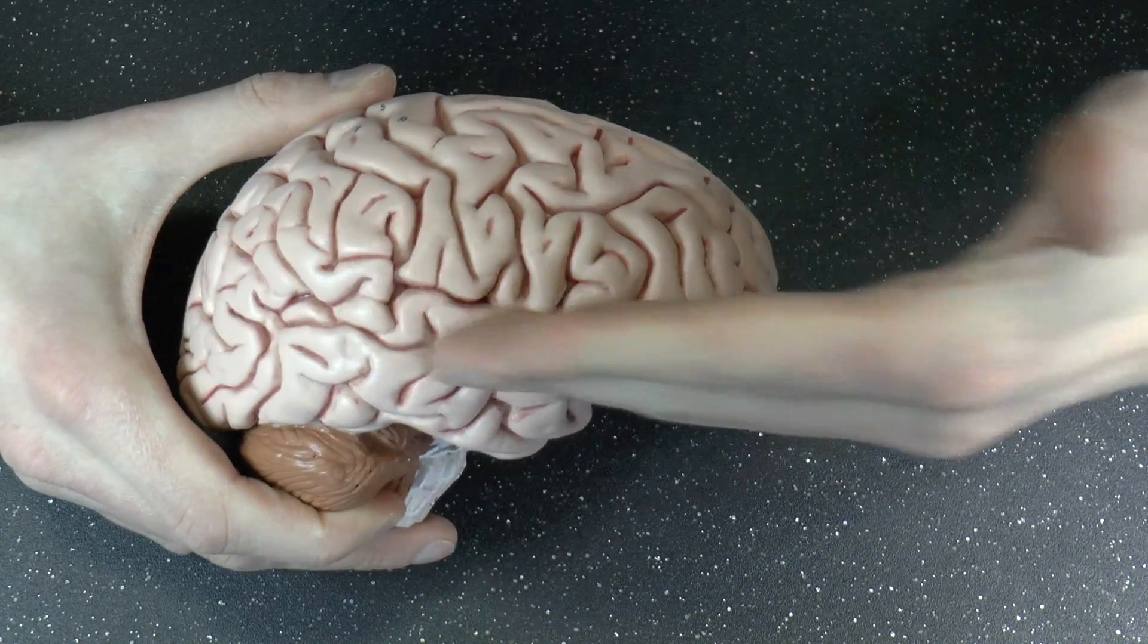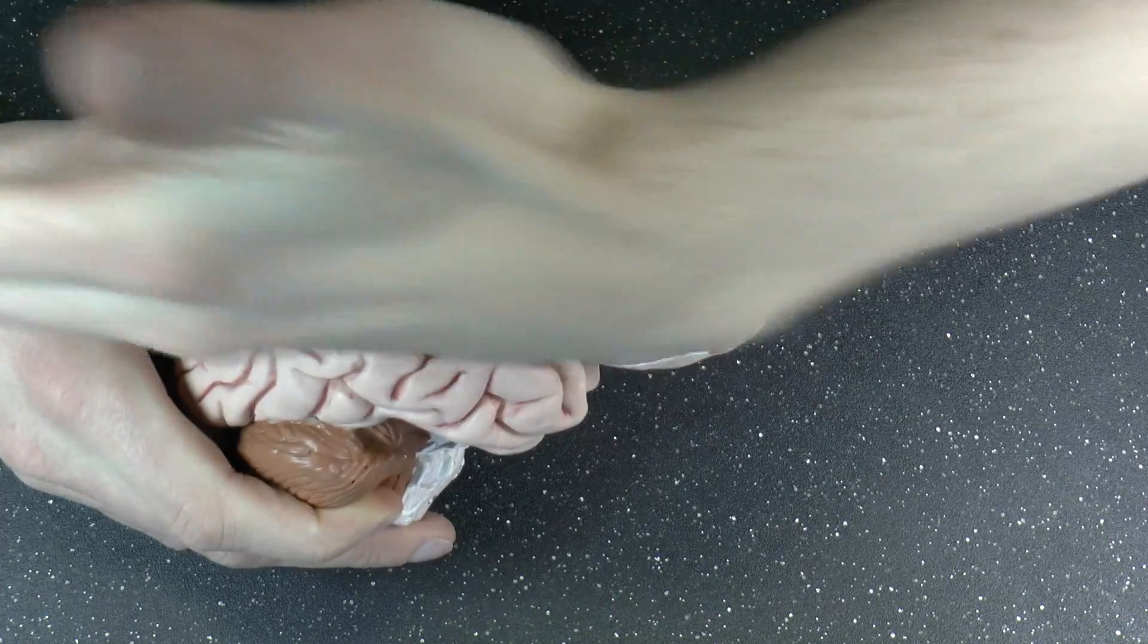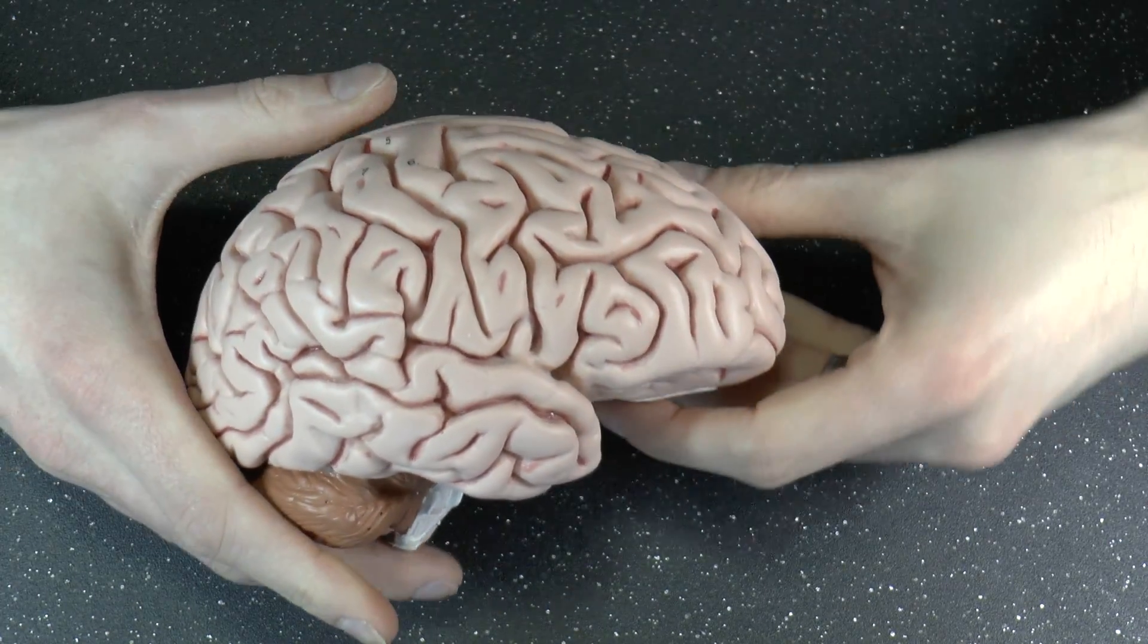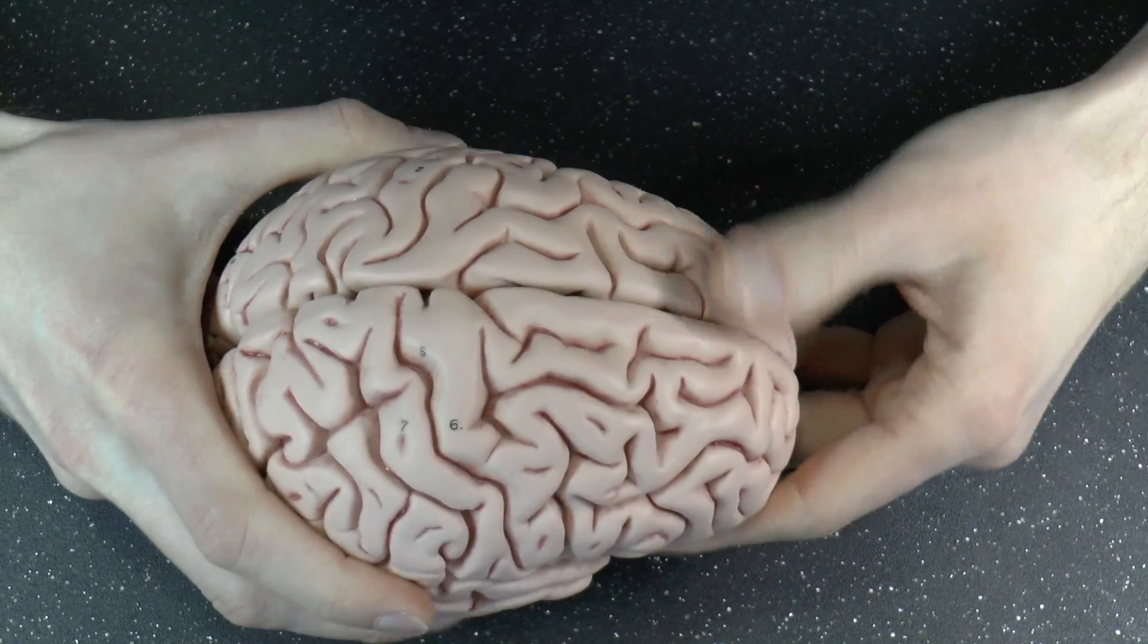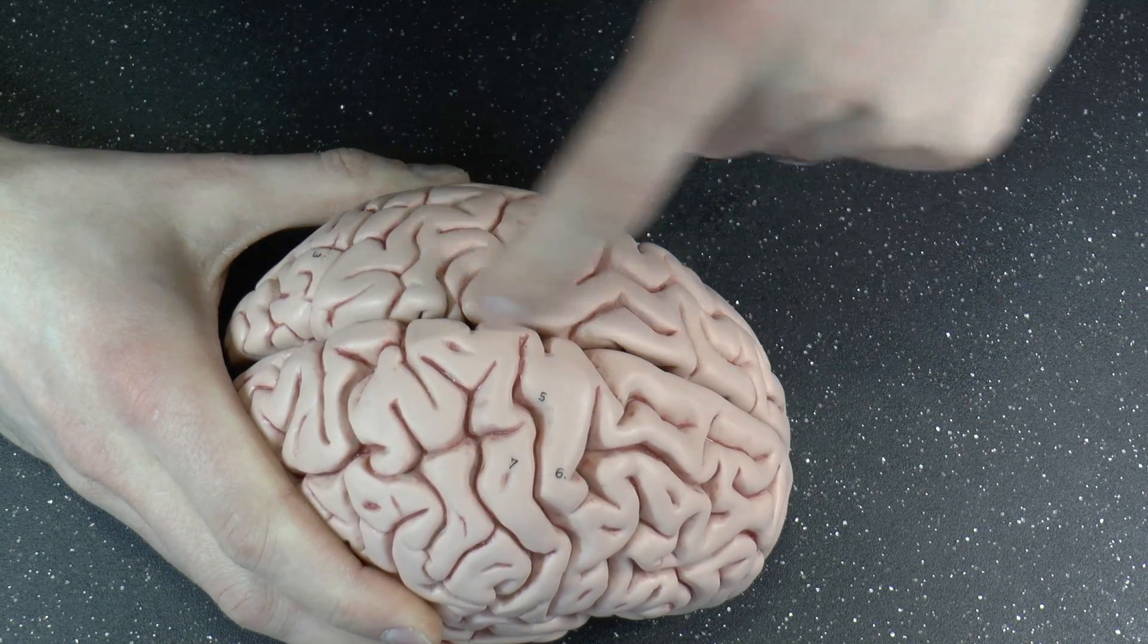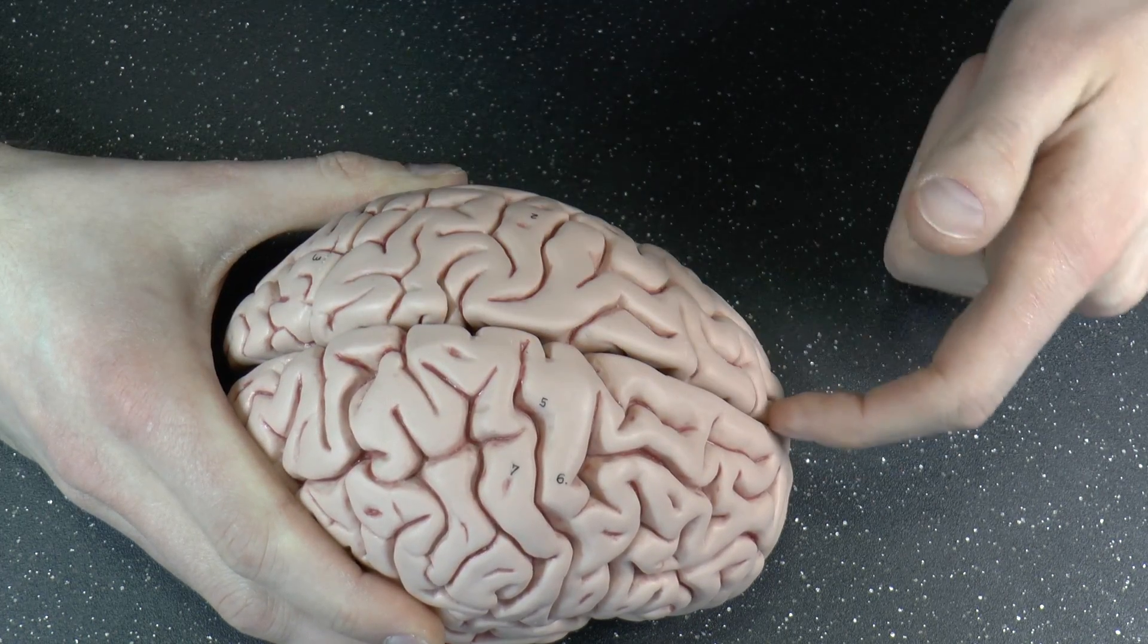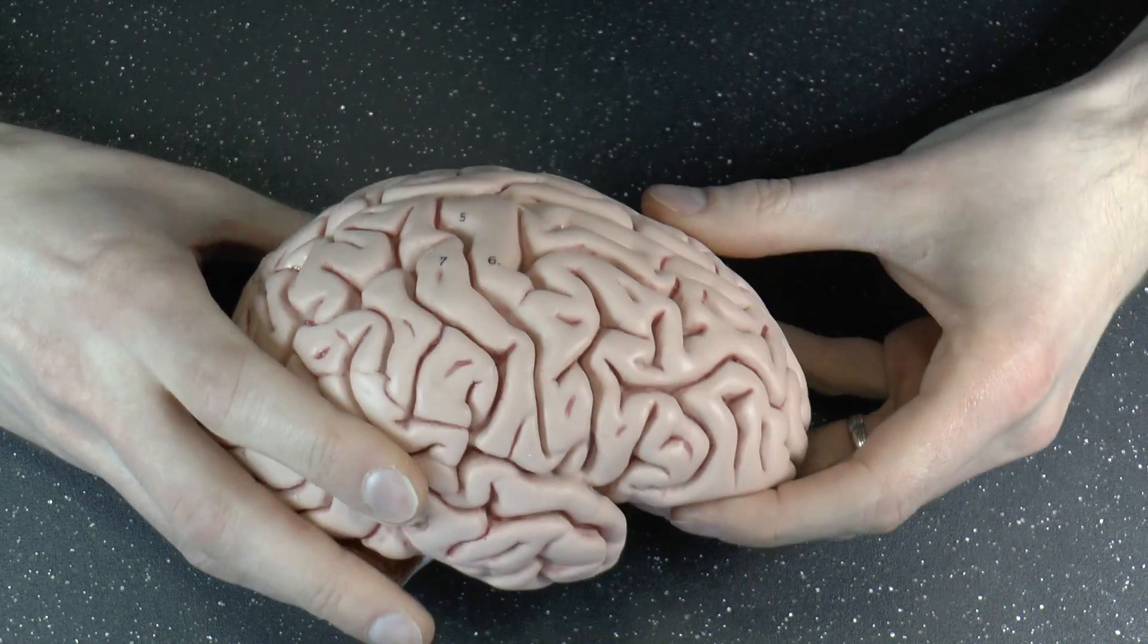And it's also lateral, right? It's kind of in the same plane as the brain, so to speak, the horizontal. Now, the other ones are much harder. There is this big fissure, right? The longitudinal fissure. That's easy, because it separates one hemisphere from the other. But the other ones are tough.